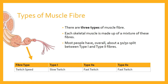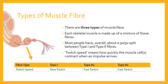Type one fibres are slow twitch fibres, and type two fibres — whether two A or two X — are fast twitch fibres. Twitch speed simply means how quickly that muscle fibre contracts when it receives an impulse from the central nervous system. When that impulse arrives and the muscle is innervated, a contraction is caused. If it contracts slowly, we call it a slow twitch fibre; if it contracts more quickly, we call it a fast twitch fibre. Type one is slow twitch; type two is fast twitch.